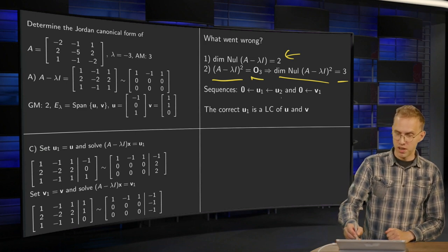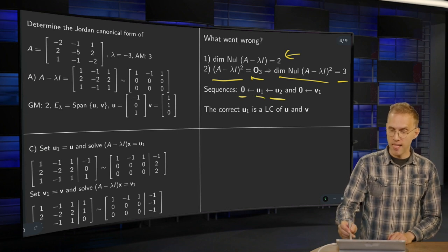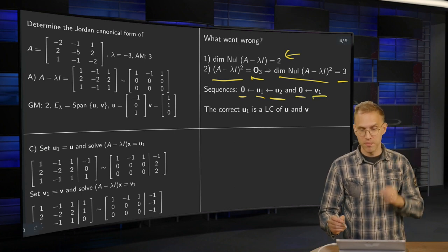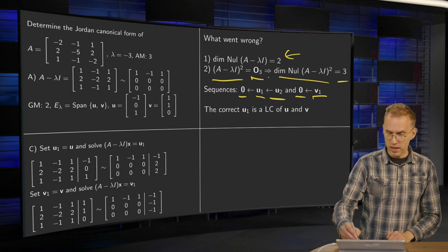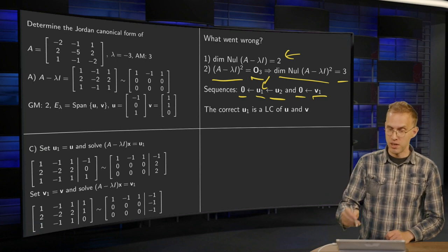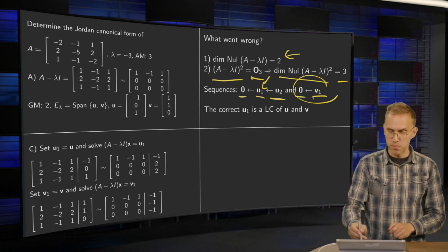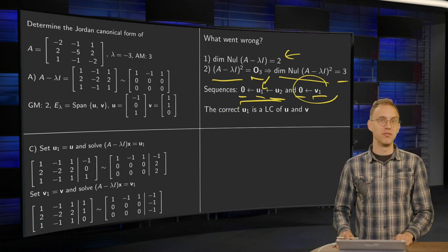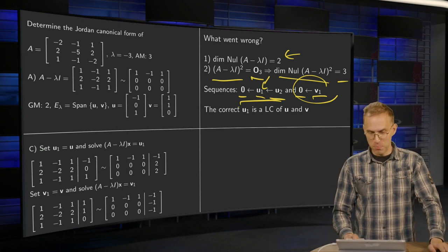So that means that we will have two sequences. One sequence starting at some unknown u_2 going into u_1 and then going to zero, and another sequence of v_1 going into zero immediately. Now the problem is to find this correct u_1 which is part of the larger cycle. I mean for this other cycle we can just pick any eigenvector. But the problem is this larger cycle here. This correct u_1 is some kind of linear combination of u and v. But which one? I don't know.